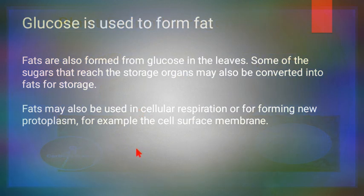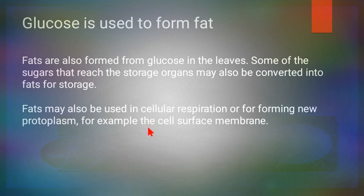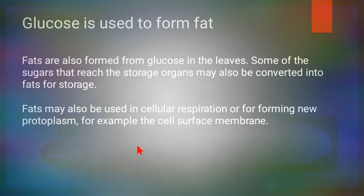Glucose is also used to form fats. The composition of fats includes carbon, hydrogen, and oxygen — the same elements as carbohydrates. The difference is that in carbohydrates, the hydrogen-to-oxygen ratio is 2:1, whereas in fats, hydrogen is in far greater quantity — around 16:1 — meaning fats have less oxygen and more hydrogen atoms.